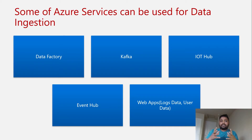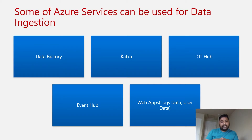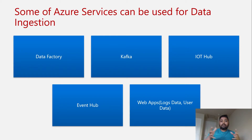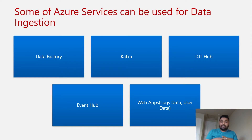Now, as we talked about in the data lifecycle, ingestion is the first step. For ingesting data in batch mode we can go for Azure Data Factory, which supports a lot of sources and destinations where you can pull all the data in and transform it. If you want to stream data we have Kafka. For IoT scenarios we have IoT Hub. We have Event Hub as well. We can connect web apps with App Insights to capture log data. These are the services we generally leverage for ingestion.